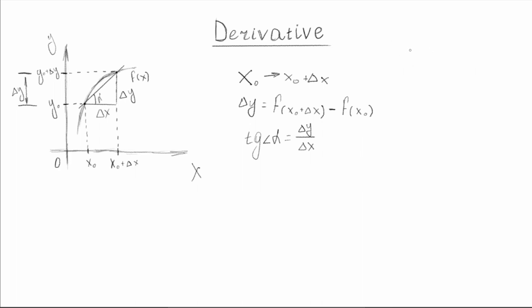But now let's take this value of delta x and make it very, very small — so close to our x0 value that it's not even noticeable. On the graph it'll be something like a tangent line for this point. So we can take the limit of this delta x value because we want it to approach zero — very, very close to zero but never reaching it. It'll be the limit where delta x is approaching zero of tangent alpha.